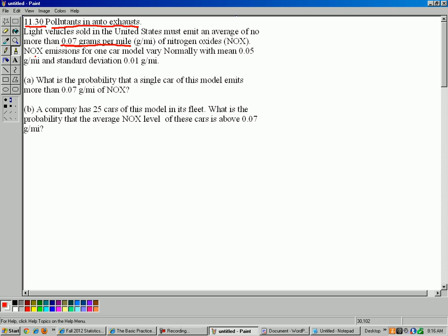Nitrogen oxide emissions for one car model vary normally with a mean of 0.05 grams per mile and a standard deviation of 0.01 grams per mile. So even though they don't ask us to, let's go ahead and make a distribution of this.